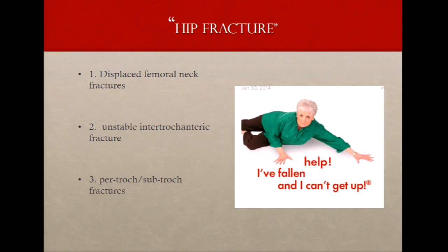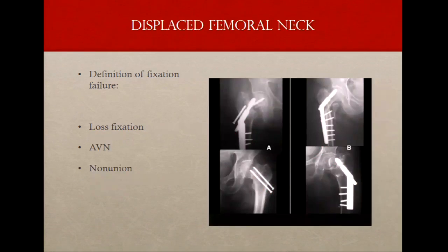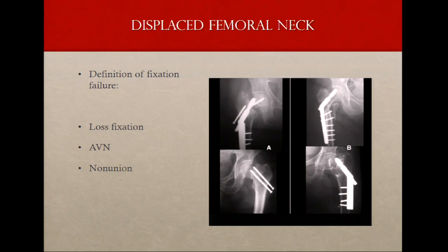How do we prevent her from winding up back where she is? When we talk about hip fracture, it's kind of a nebulous term. We're doing that study with Penn to see which anesthetic is best. When you look at the sheet, it basically includes everything down to the subtroch as defined as the hip fracture. So we'll go over the most common ones to fail. The displaced femoral neck is the bugaboo for pretty much every orthopedist — it's probably still an unsolved fracture. Failure is defined as loss of fixation, AVN, or nonunion in a displaced femoral neck.